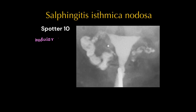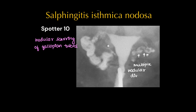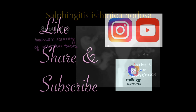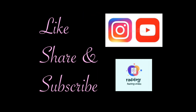This is a case of salpingitis isthmica nodosa. The name itself suggests that it is a pathology of the fallopian tubes where there will be nodular scarring. Subscribe to Radiology Doodles on YouTube and Instagram for more videos.